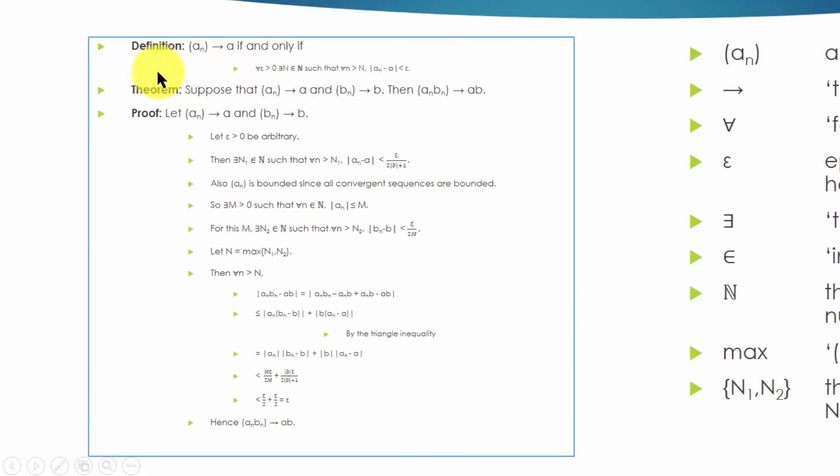Let's look at the lecture note and identify its key components. It contains a definition, a theorem, and a proof. The definition tells us what it means for a sequence to converge to a limit. The theorem tells what happens when we combine two convergent sequences, A-N and B-N, by multiplying their respective terms.